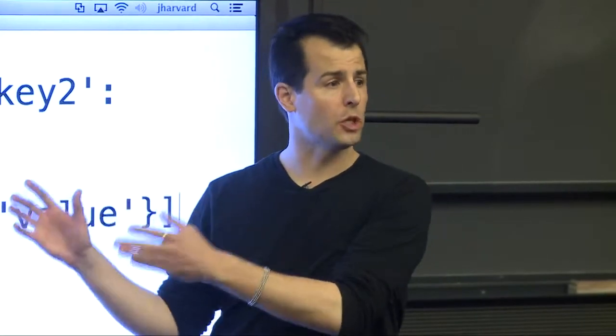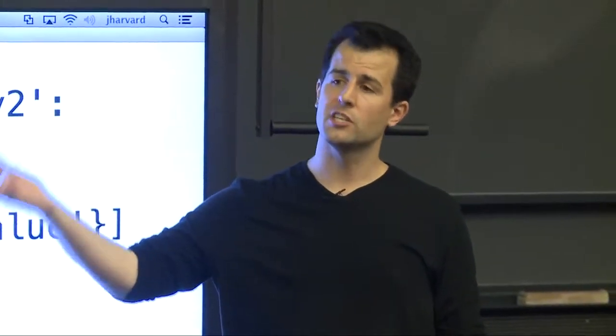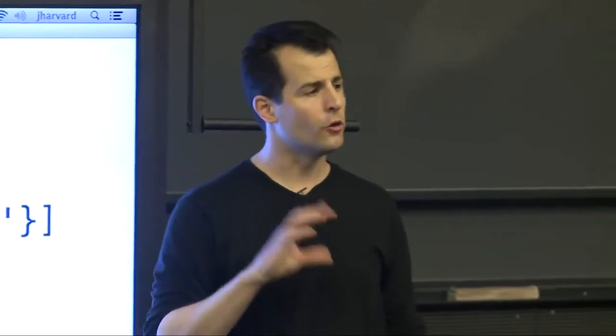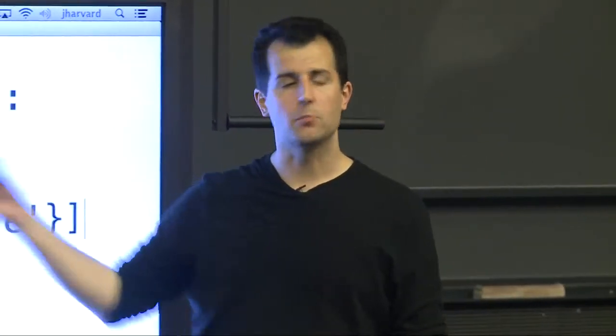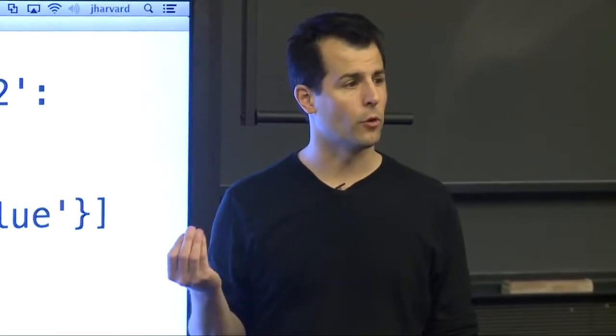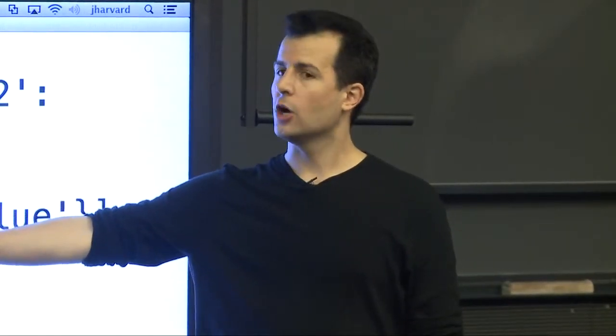It's JavaScript object notation. So when Google sends back data, when Twitter sends back data, when Facebook sends back data, they're not usually using XML which looks like HTML these days. They're using this because it's much lighter weight and more compact among other reasons.